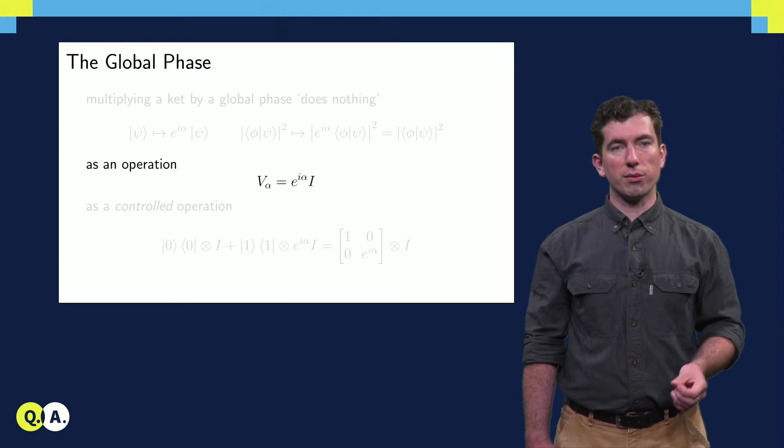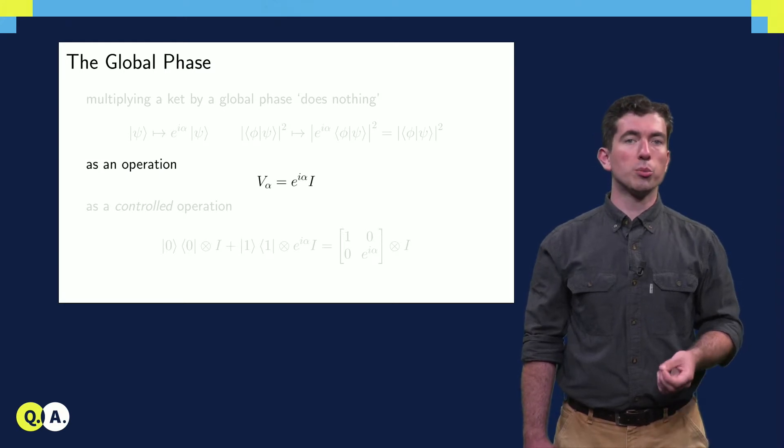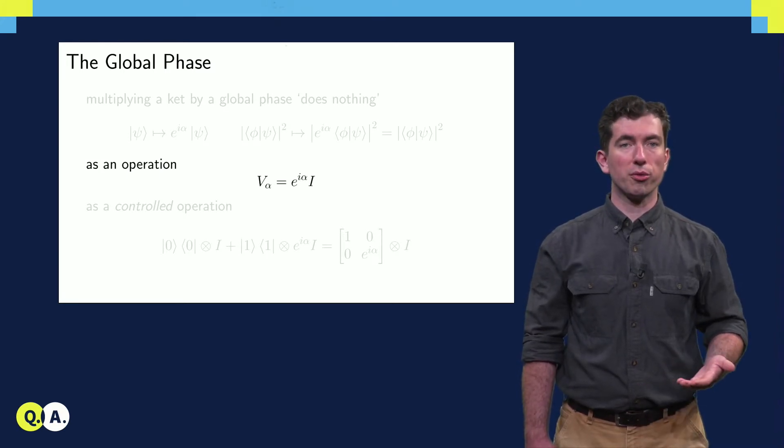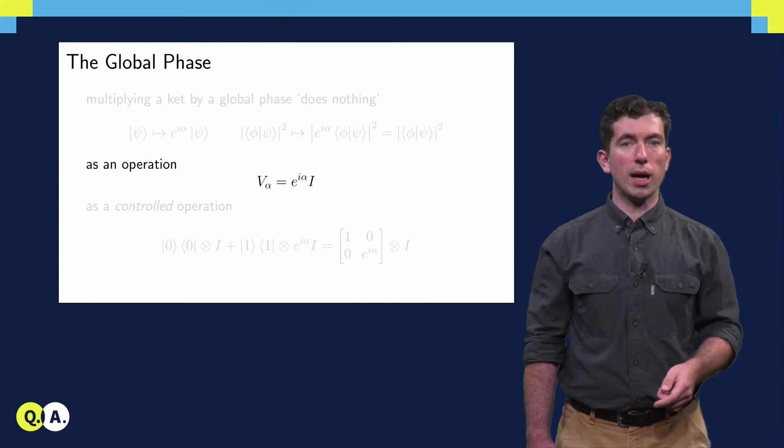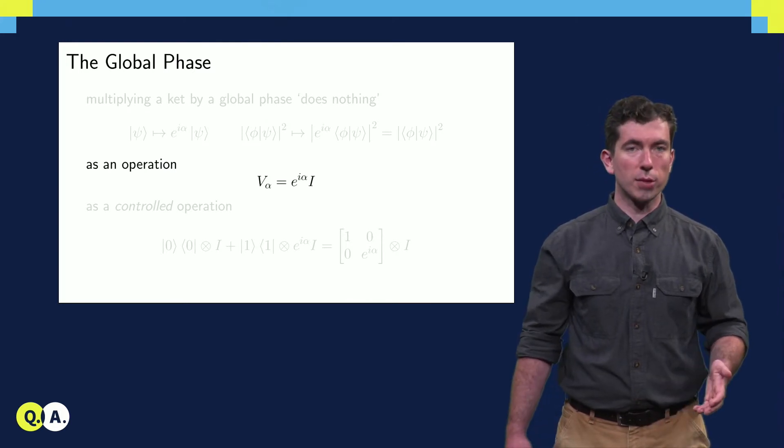Nevertheless, we can define an operator V alpha, which multiplies any input state by a global phase. It's pretty simple, just e to the i alpha times the identity. Nothing special.